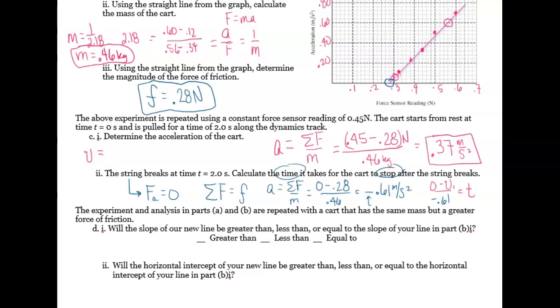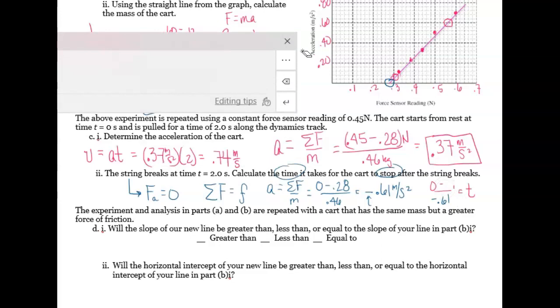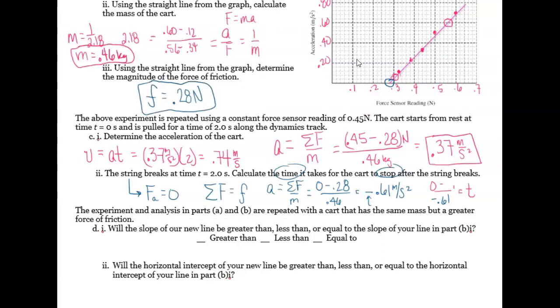So I can start from rest. So I can get rid of my velocity initial times acceleration times time. I'm going to use my acceleration of 0.37 times time, which is two. That's going to give me a velocity initial of 0.74 meters per second. And that's what I'm going to use in my velocity initial down here. So I'm going to replace that. And say 0.74. And then that's going to give me a time of 1.21 seconds.